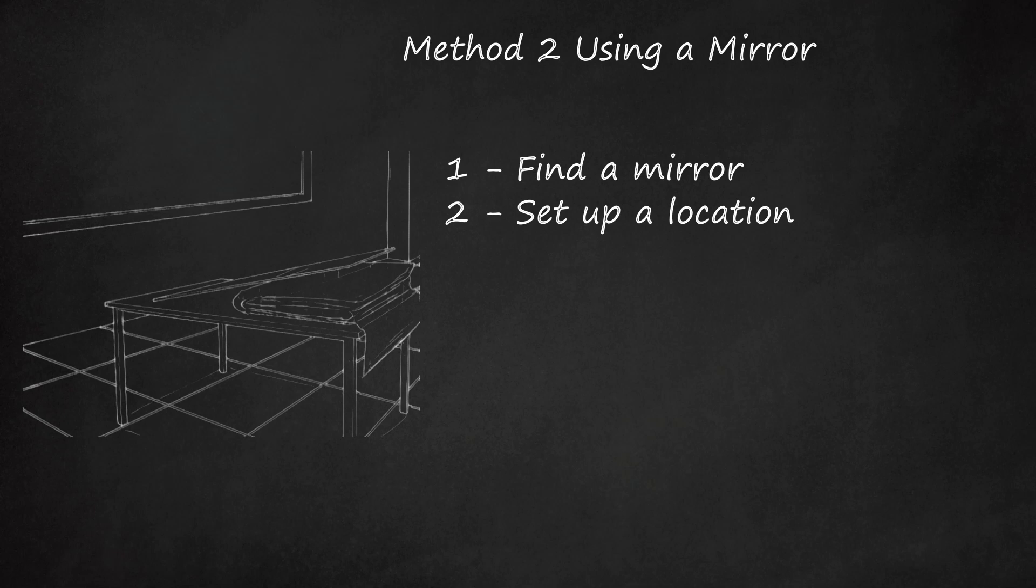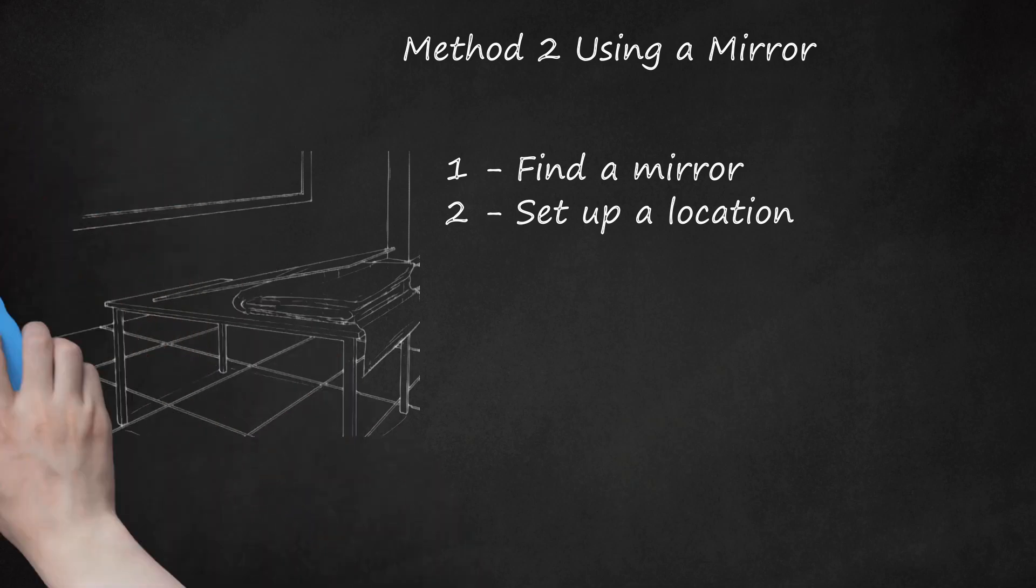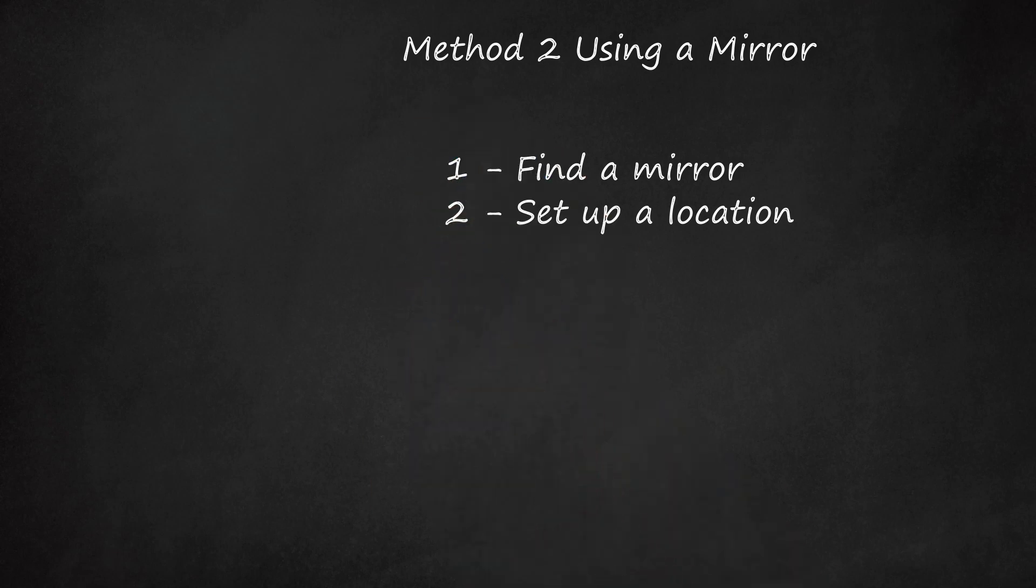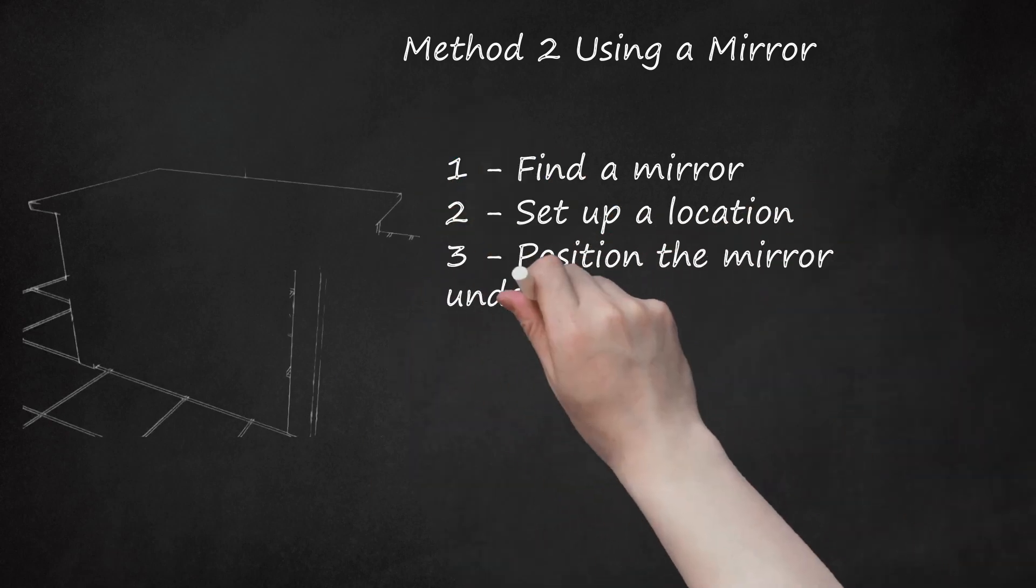You're trying to create a foreground reflection of the ground underneath the table. A cheap, fold-out table will work well for this illusion. Step 3 - Position the Mirror Underneath the Table.